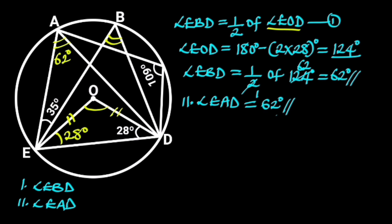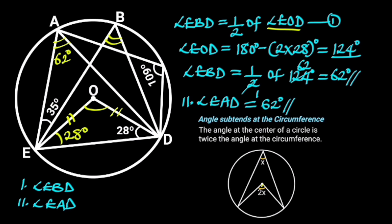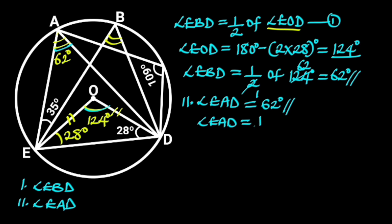The second method: we also recall the circle theorem that the angle at the center of a circle is twice the angle at the circumference. The angle at the circumference must be half of the angle at the center. Since we already have the angle at the center, which is 124 degrees, angle EAD must be half of this angle. Hence, angle EAD equals 1/2 times 124, which is 62 degrees.